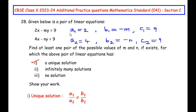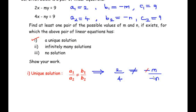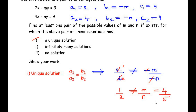Let us start with finding a unique solution. The condition for a unique solution is a1 over a2 should not be equal to b1 over b2. Substituting: 2 over 4 should not equal negative m over negative n. The negatives cancel and 2 over 4 simplifies to 1 over 2. So 1 over 2 should not equal m over n. We can take any value of m over n that is not equal to 1 over 2. I am going to choose 4 over 5, since 4 over 5 is not equal to 1 over 2.